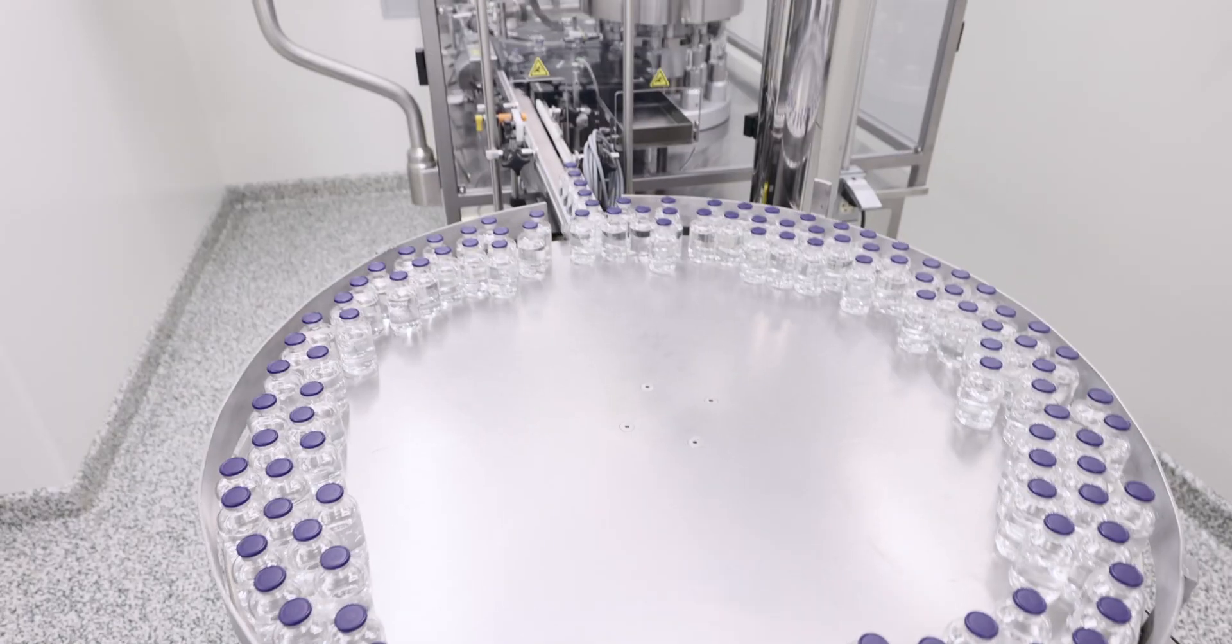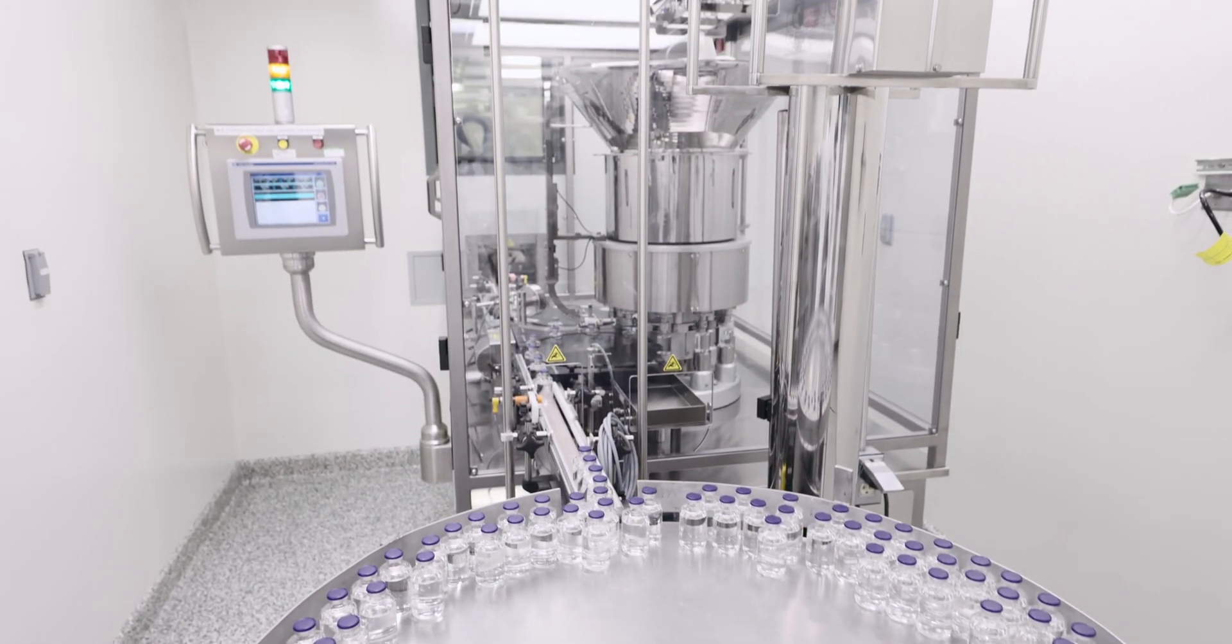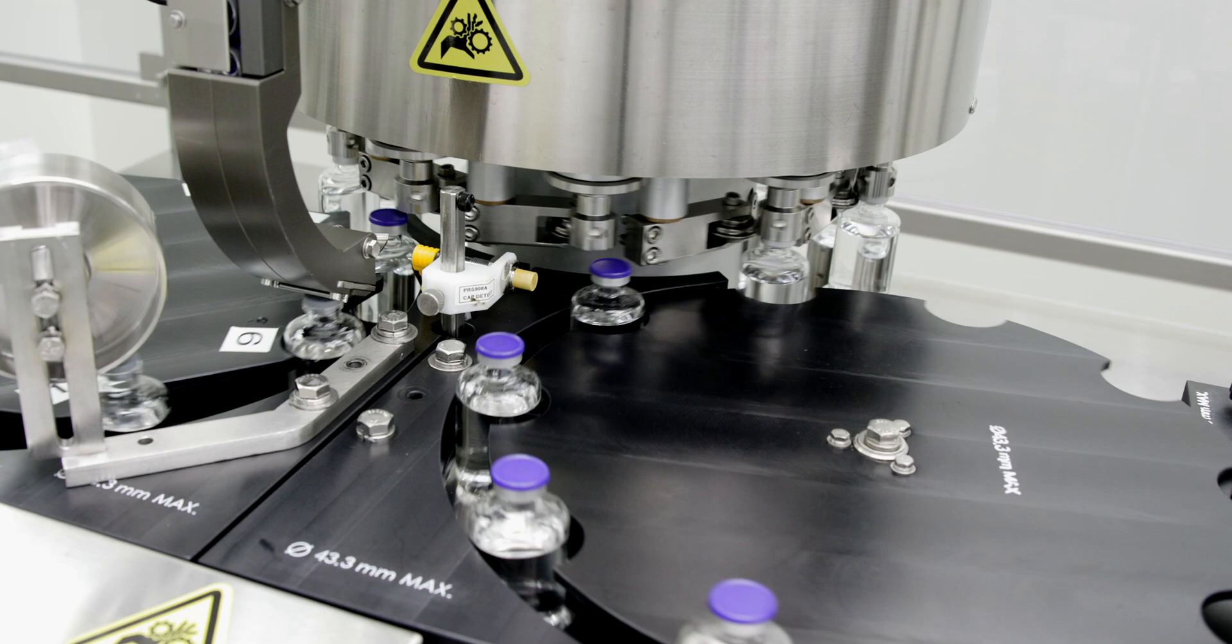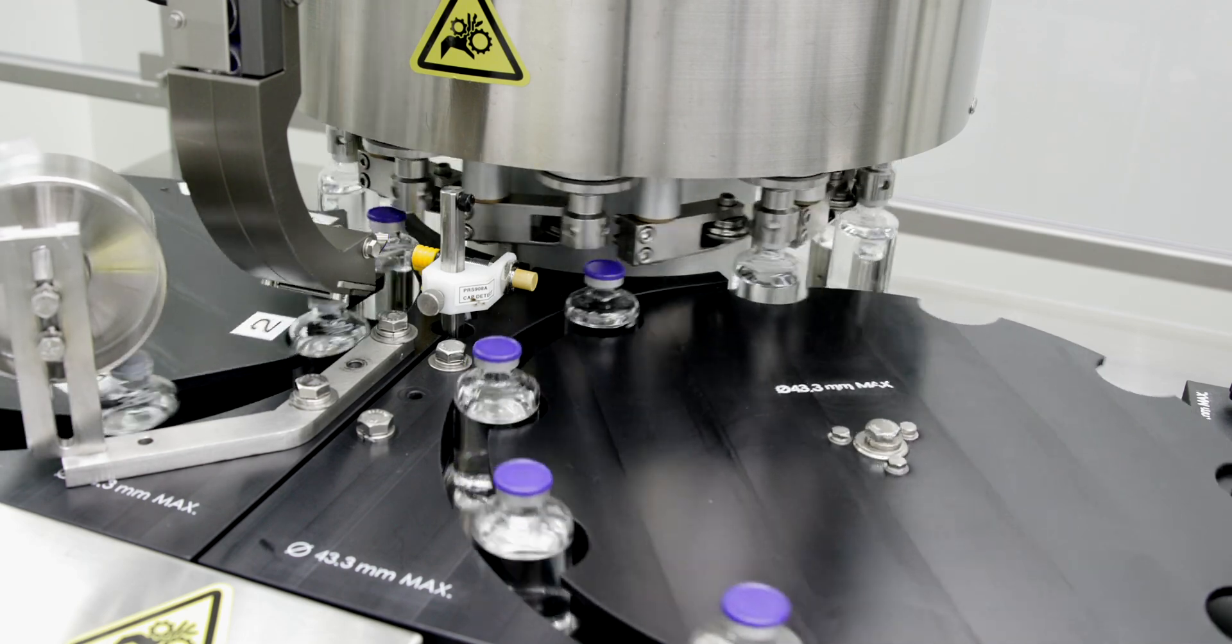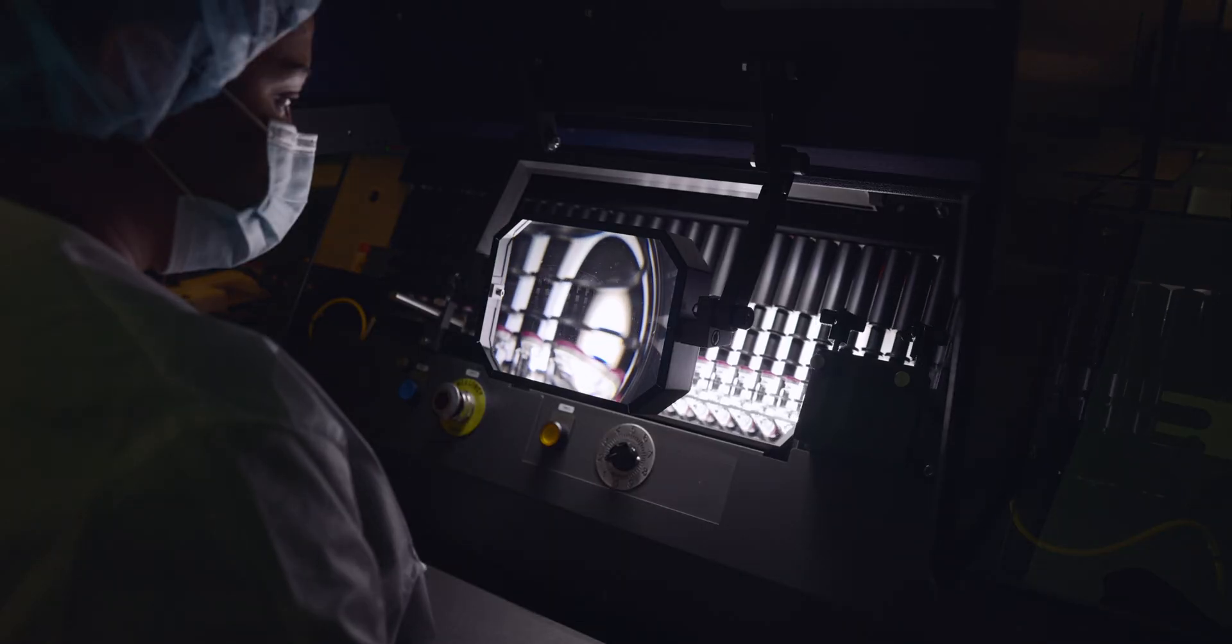Filled and stoppered vials then move to PII's M&O peri capper for capping under Grade A conditions. The vials are then loaded onto trays for storage and visual inspection according to USP guidance.